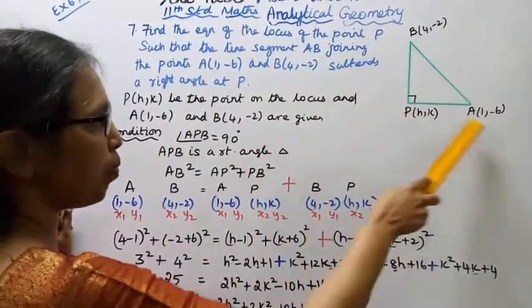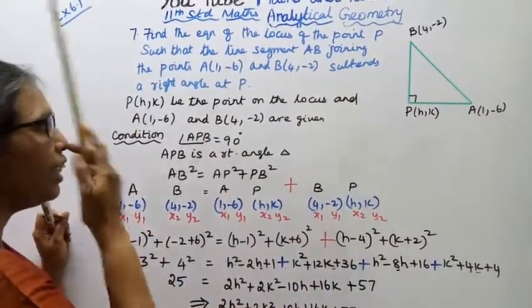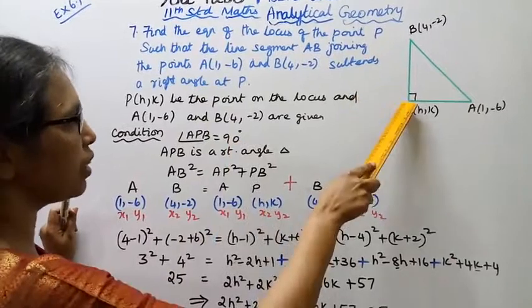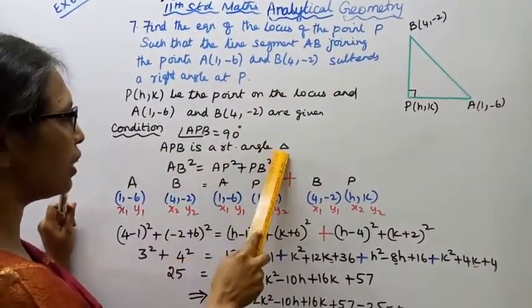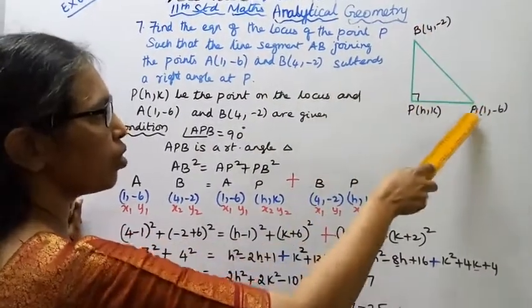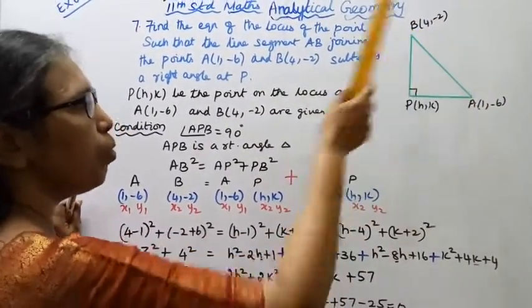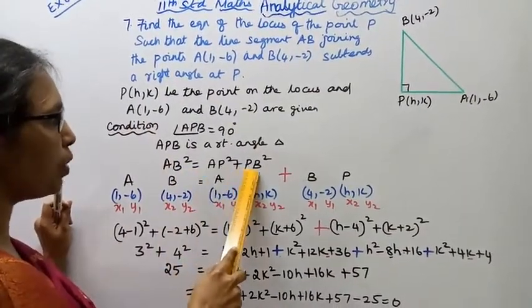Triangle APB is a right angle triangle with 90 degrees at P. Since APB is a right angle triangle, we can write: AB² = AP² + PB².